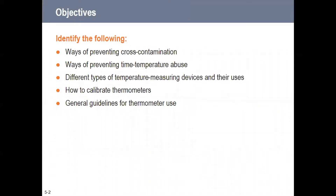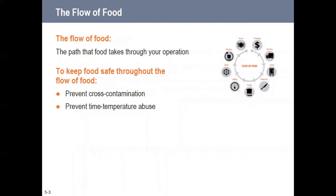For this chapter, we're going to talk about ways to prevent cross-contamination, preventing time-temperature abuse, different temperature measuring devices and what they're good for, how to calibrate a thermometer, and general guidelines for thermometer use — because the thermometer is going to be one of your best weapons to help prevent foodborne illness.